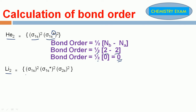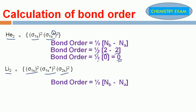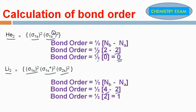Next, Li₂. The electronic configuration is sigma 1s², sigma star 1s², sigma 2s². These are the electronic configurations for the Li₂ molecule. Here, 4 bonding electrons, 2 anti-bonding electrons. So 1/2 into (4 minus 2) equals 1/2 into 2 equals 1. The bond order for Li₂ molecule is 1.